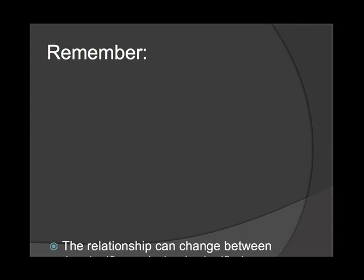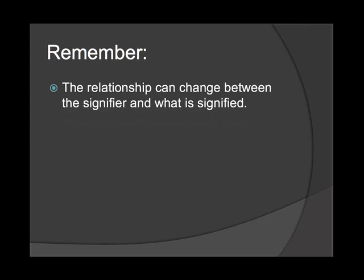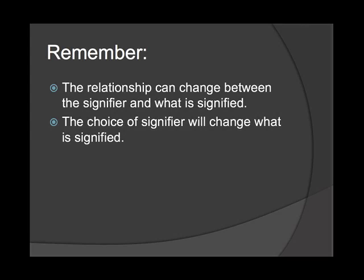The relationship can change between the signifier and what is signified. For example, the word 'fit' used to refer to someone's athletic ability — how physically fit they were — but now it is used to refer to someone's sexual appeal. The construction of a media text involves choosing particular signs from a range of possible signs. For example, choosing red or yellow for a woman's dress changes what is signified. Similarly, a low-angle camera shot makes a character seem powerful, while a high-angle shot makes them appear vulnerable, and films often alternate between the two to represent the character's position in the narrative.